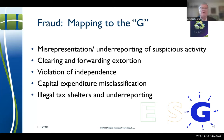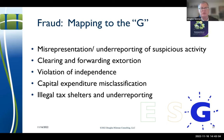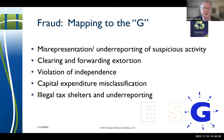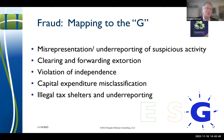Mapping to G in governance: misrepresenting or underreporting suspicious activity, capital expenditure misclassification, and illegal tax shelters. There are tremendous tax provisions for renewable energy, energy efficiencies for buildings in underserved neighborhoods, and affordable housing. The funds can be manipulated and performance against conditions can be sloppy or intentional. So where is the line for fraud?